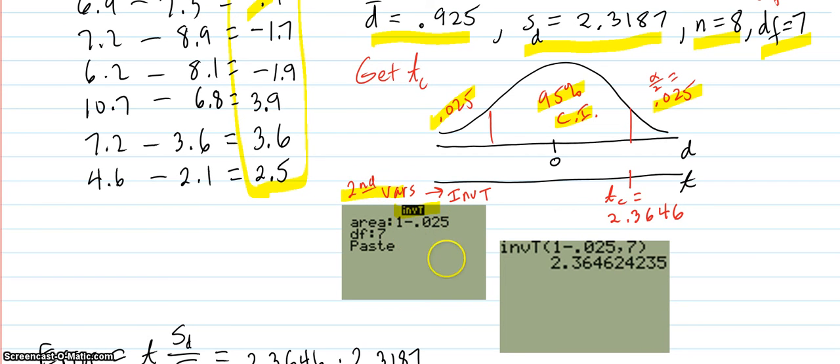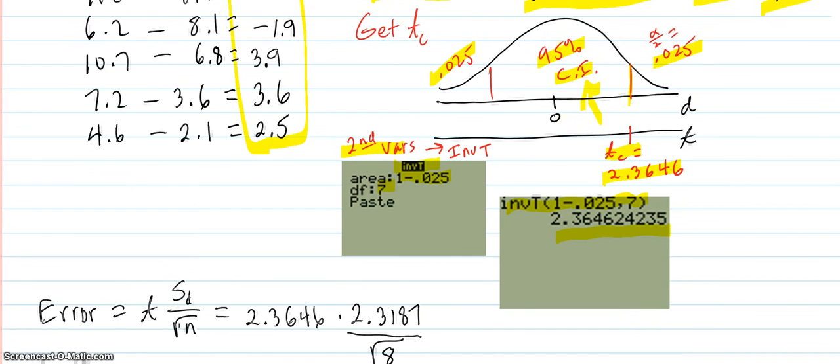Put in the area below your T. Here's your T, so below is all this area below over there, which is one minus 0.025. Degrees of freedom is seven. Hit paste, or put this in on the home screen. Same thing. And you get this, 2.3646. That's your T critical.